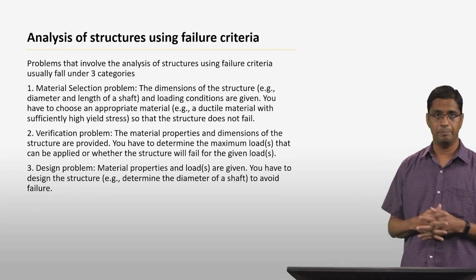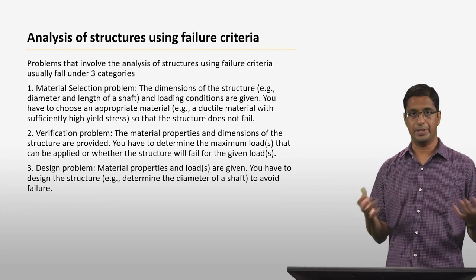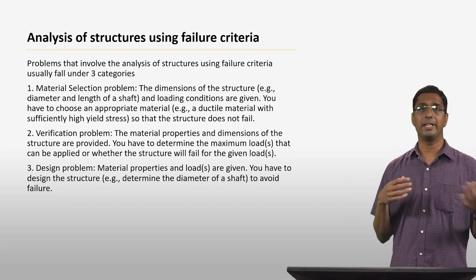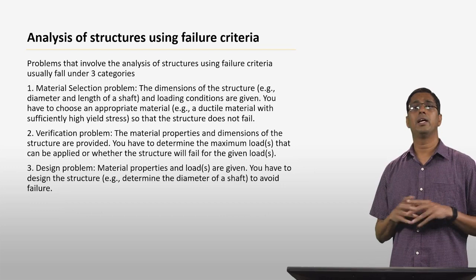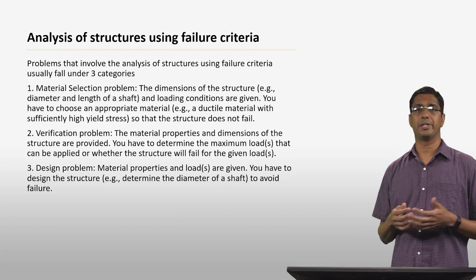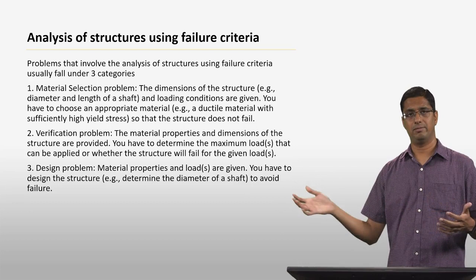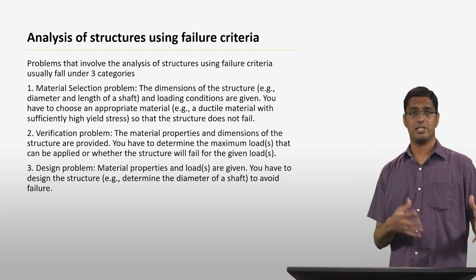In a material selection problem, the dimensions of the structure — for example, the diameter and length of a shaft — are given to you, along with the loading conditions. You essentially have to choose an appropriate material so that the structure does not fail. For example, you might have an option of choosing a shaft made of aluminum, steel, titanium, or nickel. For the given loads and dimensions, steel might do the job but aluminum might not.